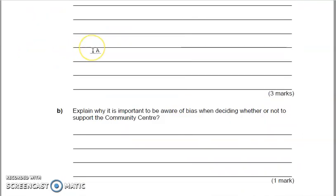Okay, and 6B — the second part of the bias question. It's almost a common sense question really. It's asking you why it's important to be aware of bias when deciding whether or not to support the community centre. What you've got to do is just think about why it's good to be aware of bias in general. If you want to have a go at this, pause the video and we'll move on to the mark scheme.